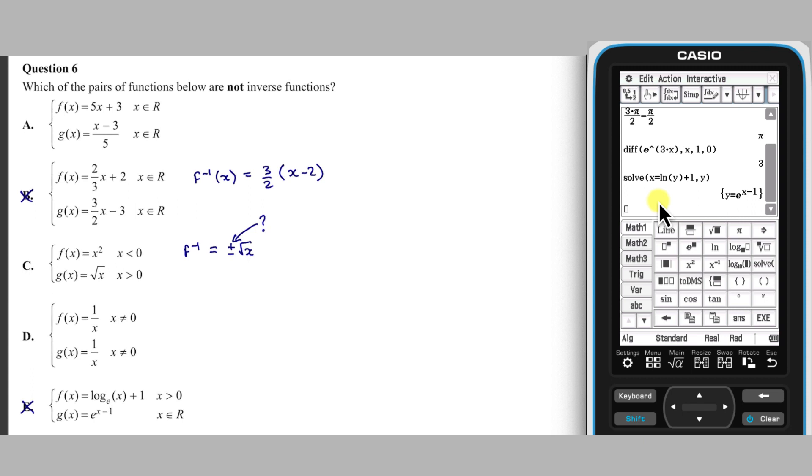A quick sketch of f of x with a given domain of x less than 0 looks like this. Its inverse will be this shape reflected through the line y equals x, and so will look like this.